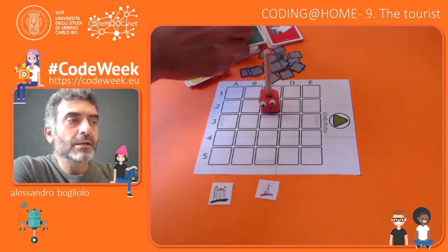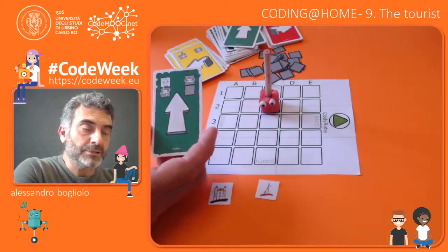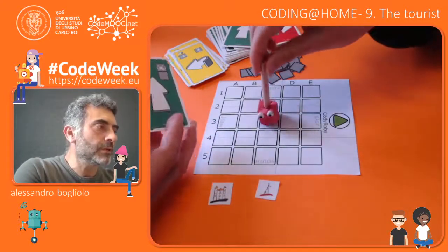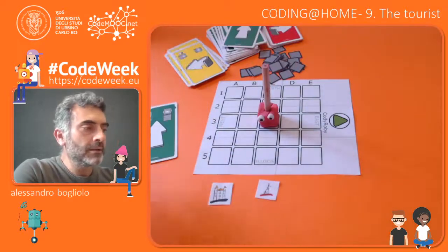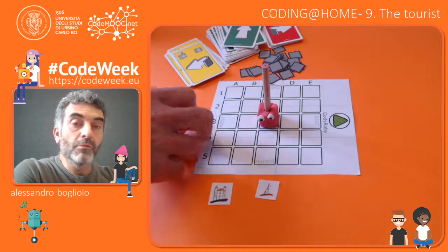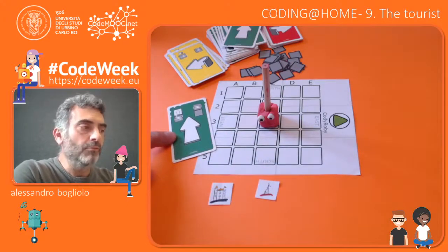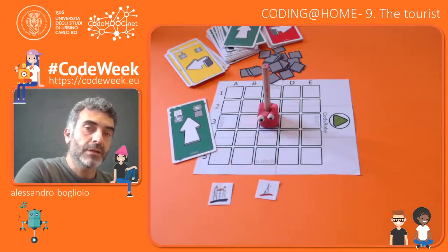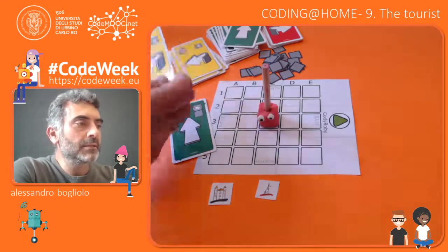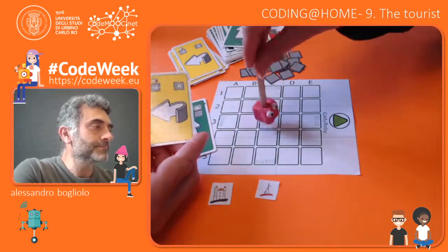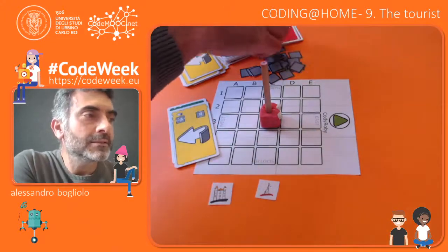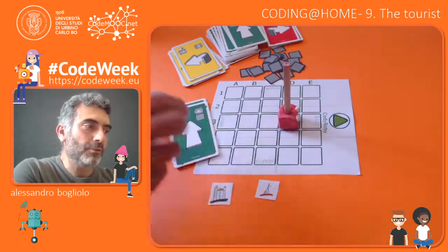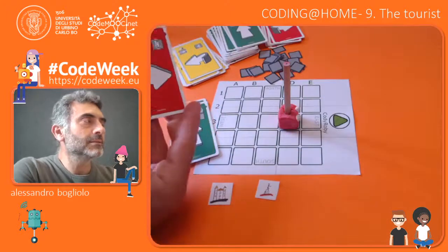We started using cards instead of tiles as instructions. Anna, could you please move the robot according to the instructions that I'm showing, in order to demonstrate what they mean? So this is move forward, or go ahead, which means the robot has to step into the box in front of it. While this means turn left, and this means again go straight or move forward. And this is turn right.